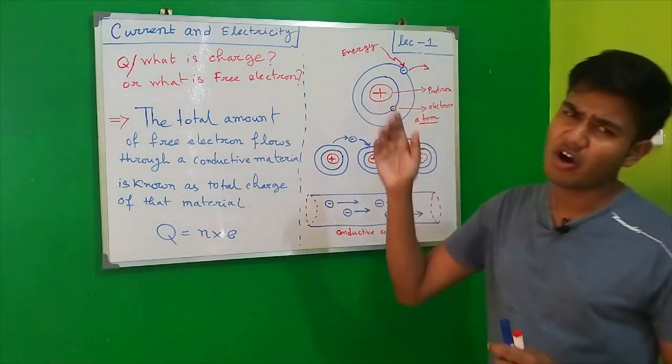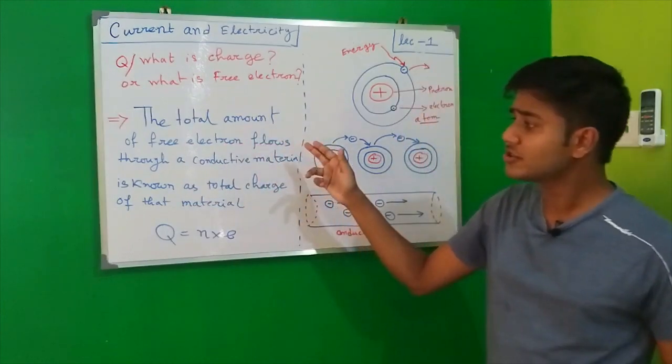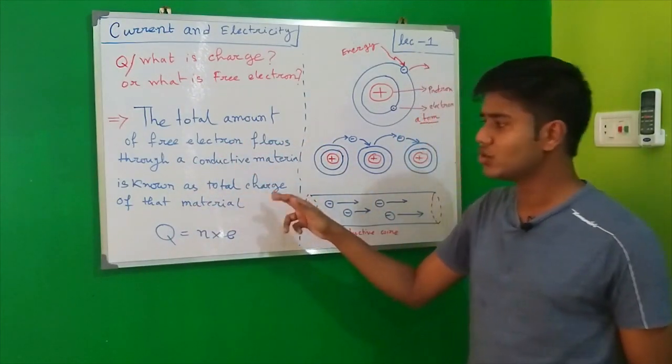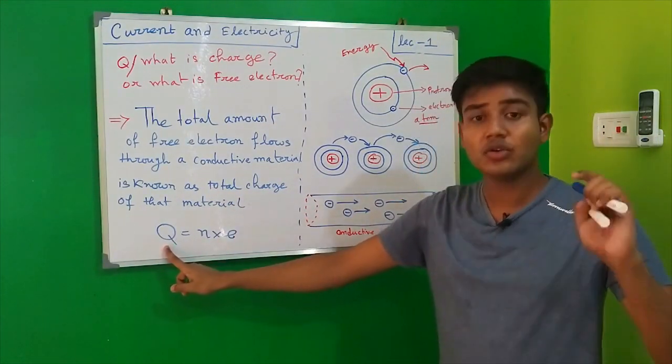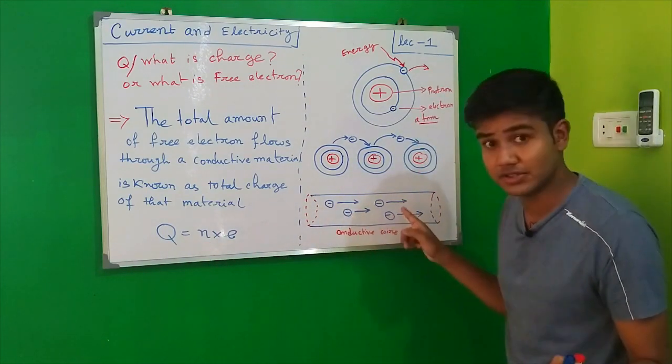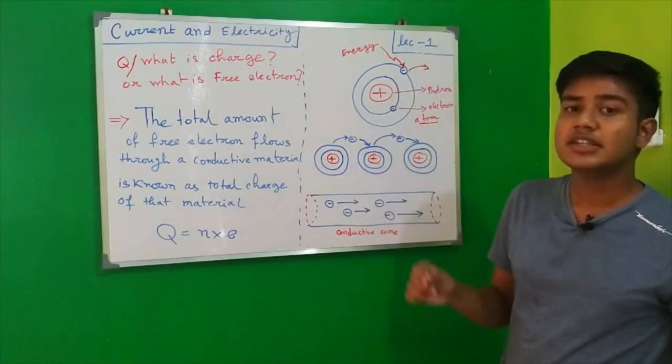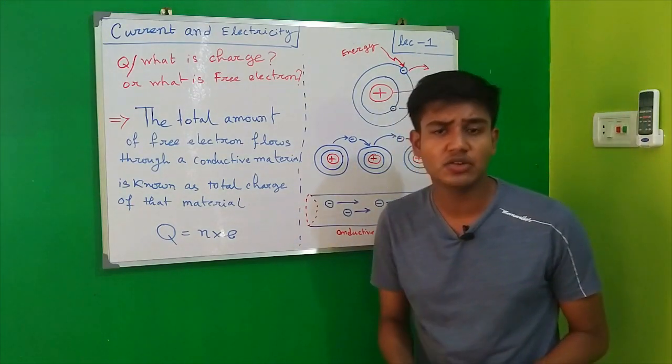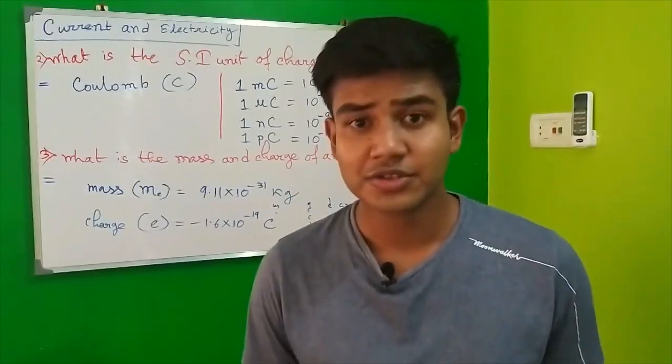Coming to the definition of free electrons or charge carriers: the total amount of free electrons flowing through a conductive material is known as the total charge of that material. Q is the total charge, n is the number of free electrons present, and e is the charge of that electron, which is 1.6 × 10⁻¹⁹ coulomb.